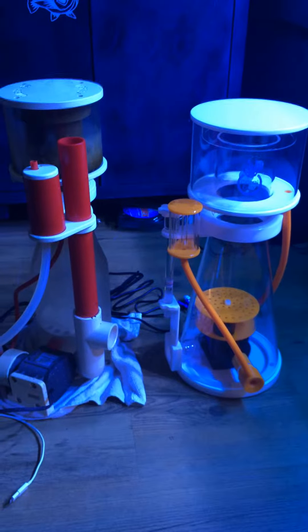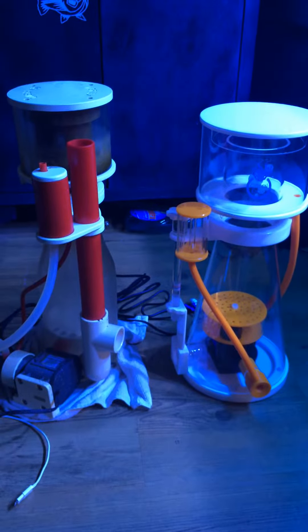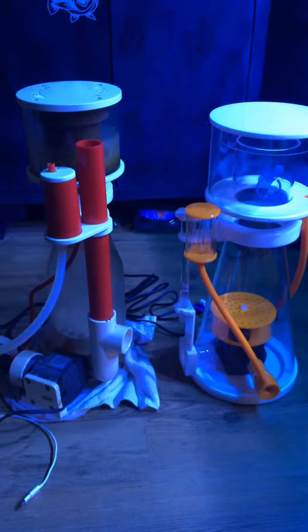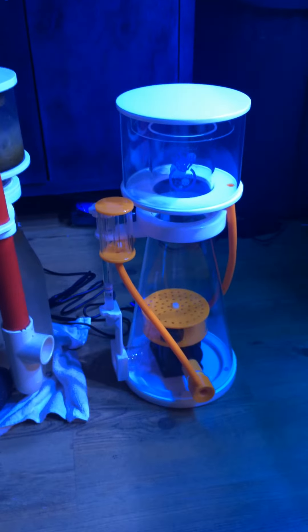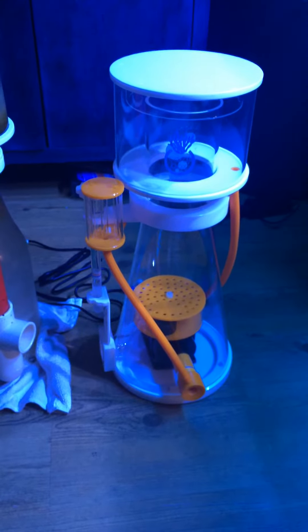Welcome to another video of To Be A Fish. Just a short video to show the difference between my old Vertex Omega skimmer and my updated Coral Box D700 skimmer.